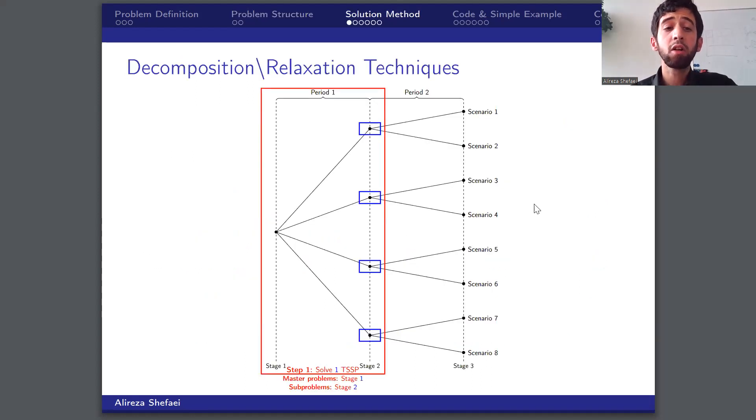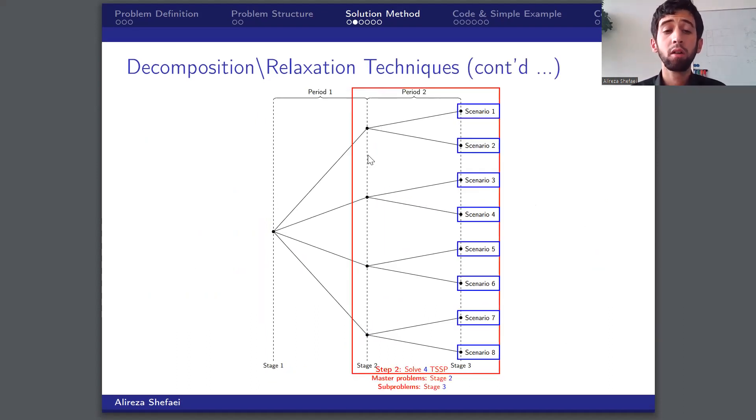So let's go back to our decision tree, where if we fix the variables of the first stage, we can decompose the second stage problem for each scenario. And in the second stage, if we fix the variables of all four corresponding problems, we can decompose the third stage along with the scenarios.